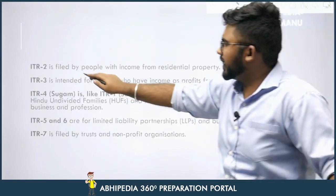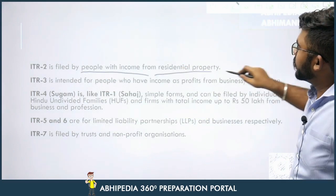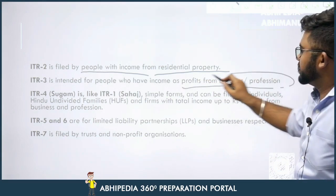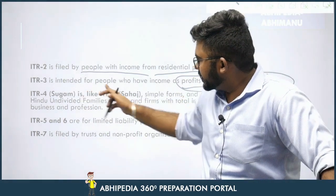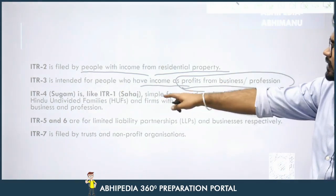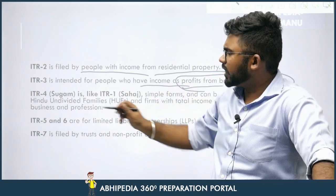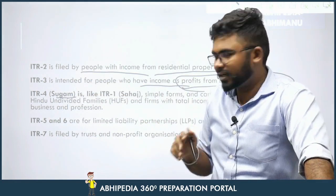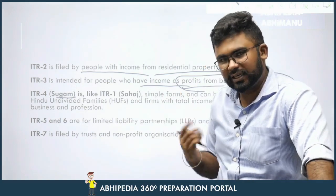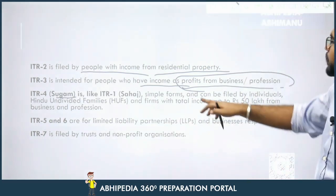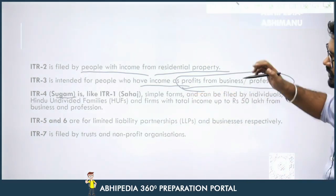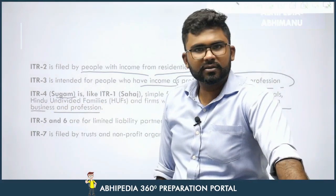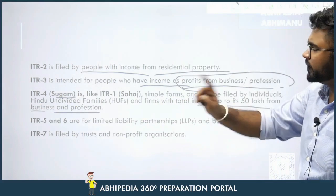ITR two is filed by people with income from residential property. ITR three is intended for people who have income as profits from businesses or professions. ITR four is very similar to ITR one, however it is named Sugam. ITR one is Sahaj, ITR four is Sugam — alphabetically 'SA' comes before 'SU', so you can use that as a memory technique. ITR four can be filed by individuals, HUFs (Hindu Undivided Families), and firms with total income up to 50 lakhs from business and profession.